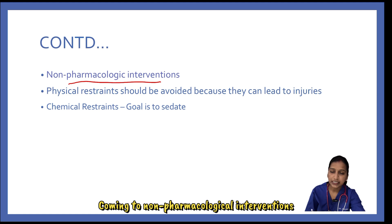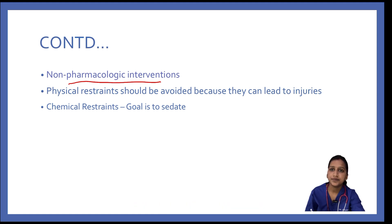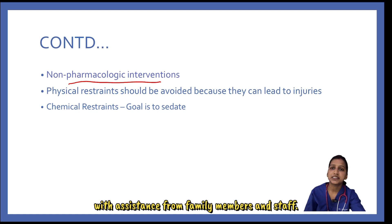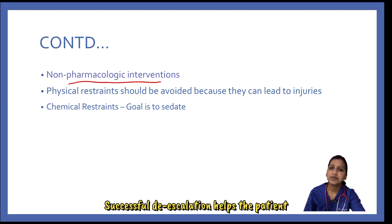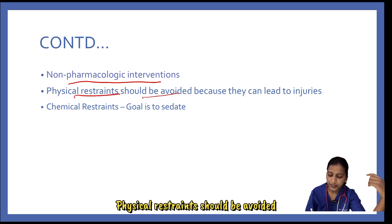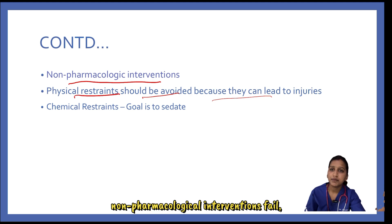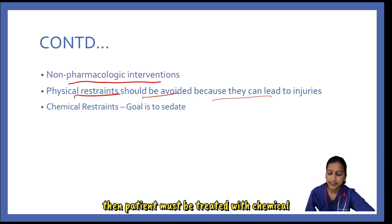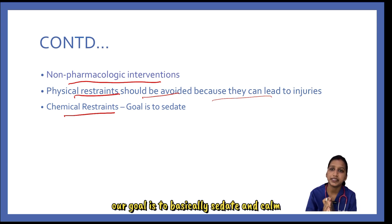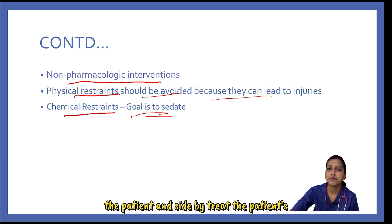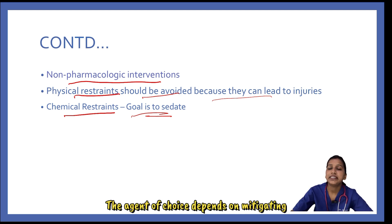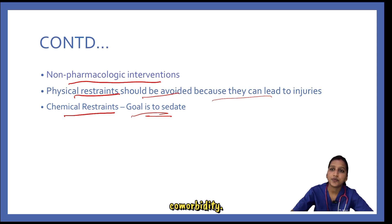Non-pharmacological interventions such as verbal de-escalation, distraction, and reassurance can be used with assistance from family members and staff. Successful de-escalation helps the patient regain control without need for further treatment. Physical restraints should be avoided as they can lead to injury. If non-pharmacological interventions fail, then the patient must be treated with chemical restraints, with the goal to sedate and calm the patient while also treating the underlying cause. The agent of choice depends on mitigating side effects and the patient's underlying comorbidity.